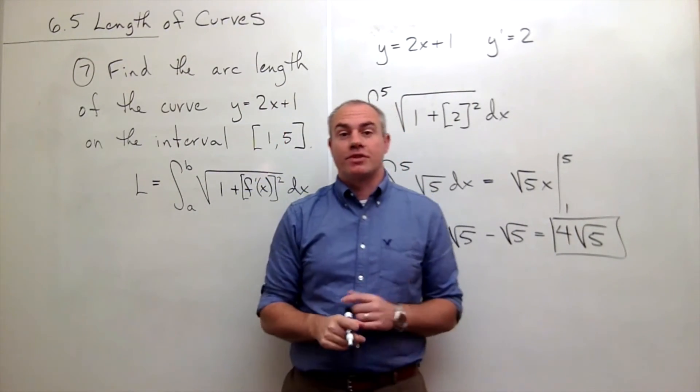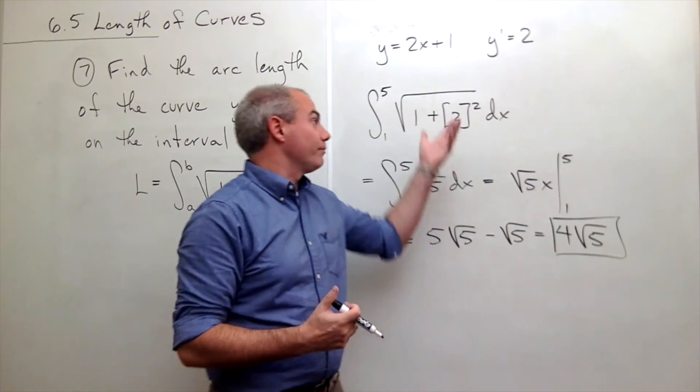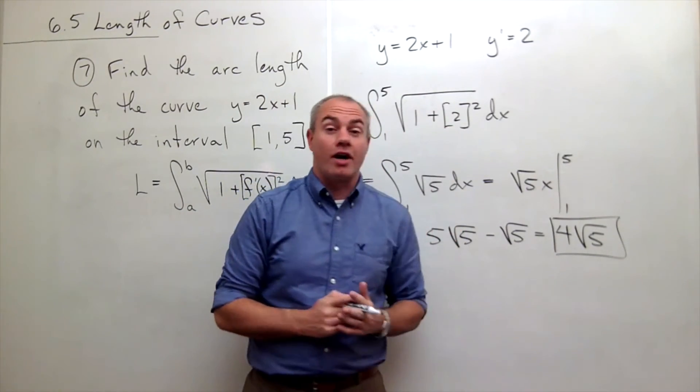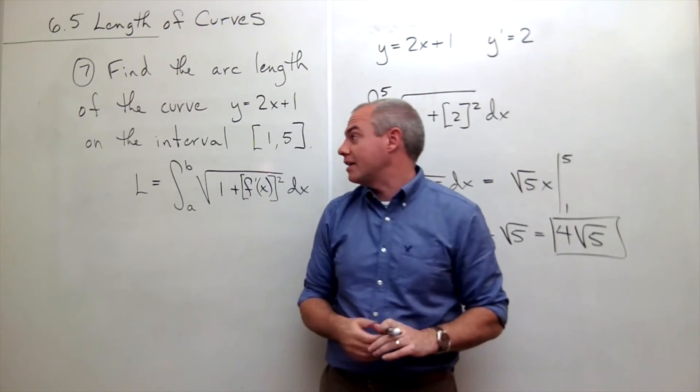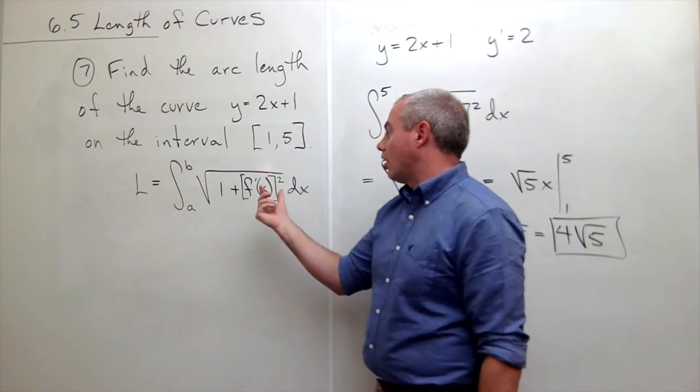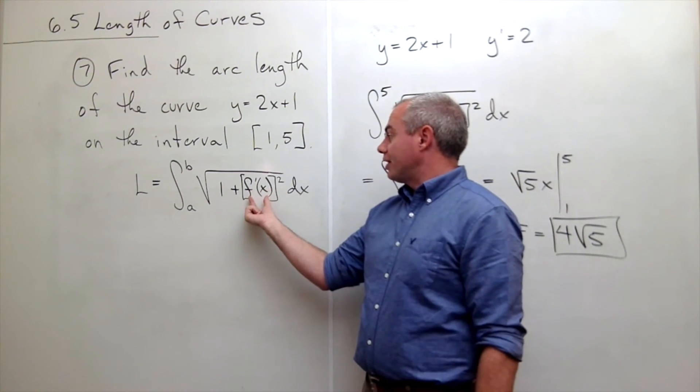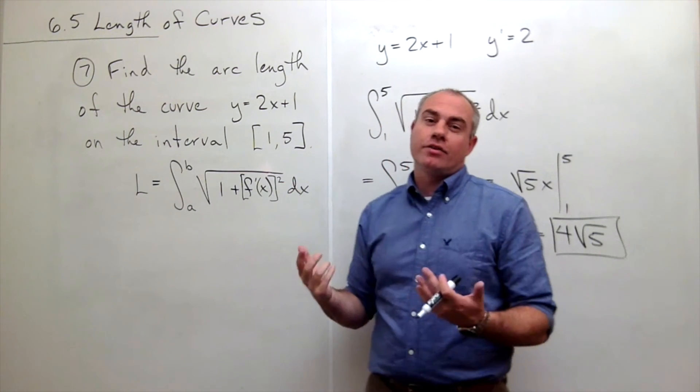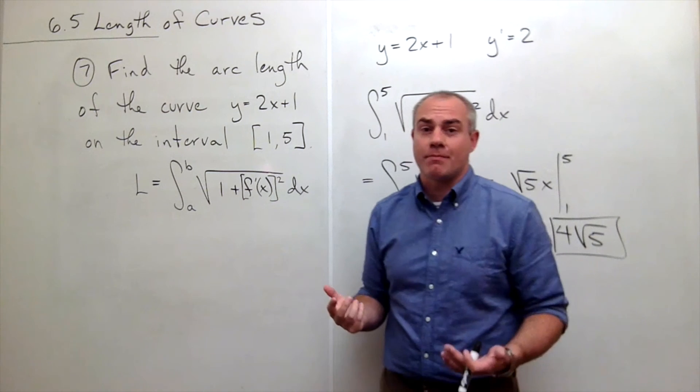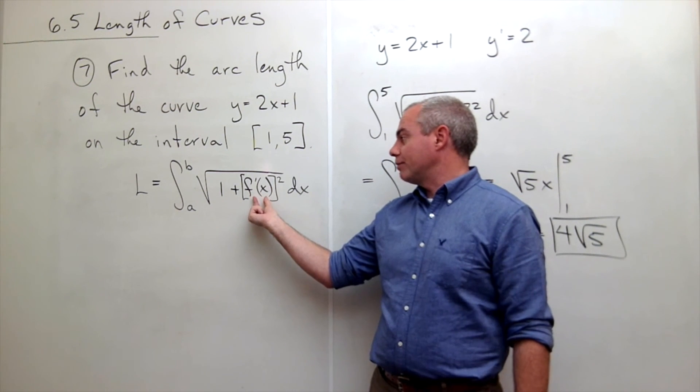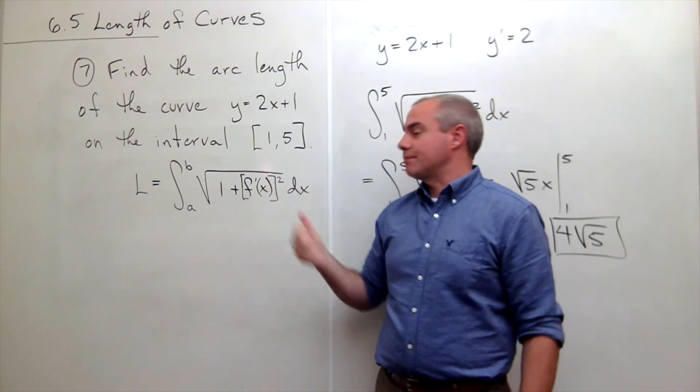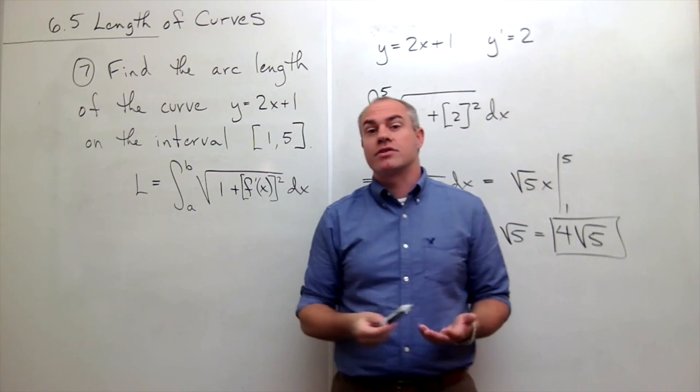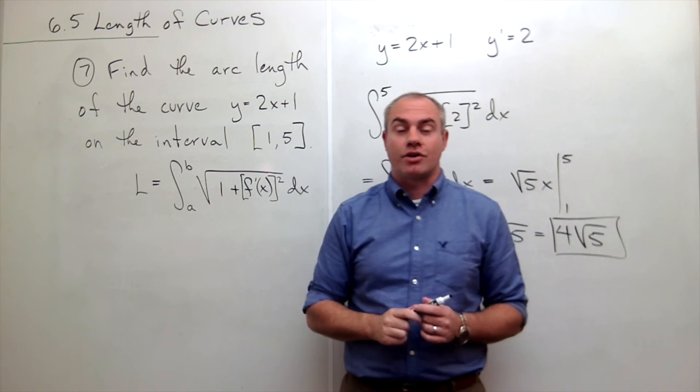This problem was fairly simple in terms of taking the derivative and plugging things in. Not a hard anti-derivative to take. But the keys here are you've got to remember the thing that you plug in has to be the derivative and you have to remember to square it. Those are the two easiest mistakes to make: you forget to take a derivative when you plug in here and you forget to put the square on. As long as you do both of those things, you should turn out okay.